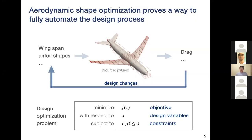Aerodynamic shape optimization is an efficient way to convert the trial-and-error design cycles into a totally automatic process. This is done by defining an optimization problem. The objective function can be selected based on the performance you care about, like drag to minimize or lift-to-drag ratio to maximize. You need a parameterization method that defines the design variables controlling the aerodynamic shape, and you need to specify necessary constraints like lift, thickness, or volume constraints.